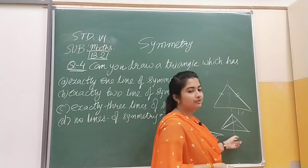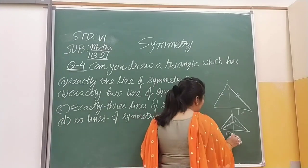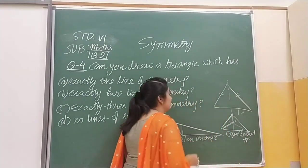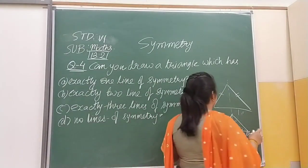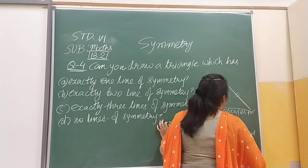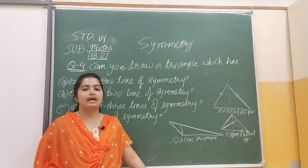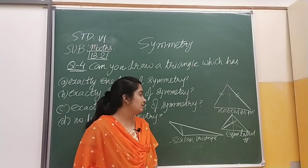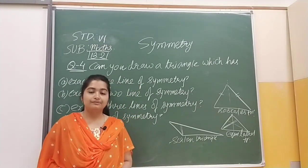So to recap: jis mein teen lines of symmetry mil rahi thi, that is an equilateral triangle. Aur jab hum one line of symmetry ki baat karte hain, humhe milega isosceles triangle. So we have discussed three triangles: isosceles triangle, equilateral triangle, and scalene triangle. Isosceles triangle has one line of symmetry, equilateral triangle has three lines of symmetry, and scalene triangle has no lines of symmetry.